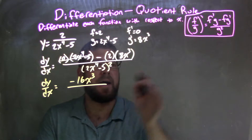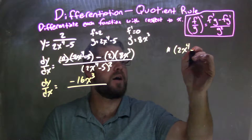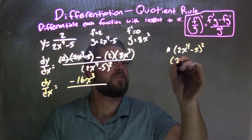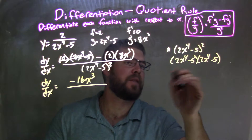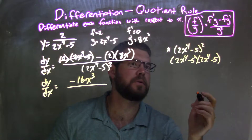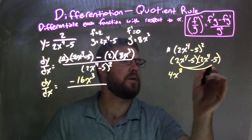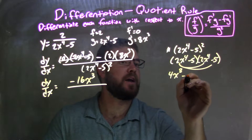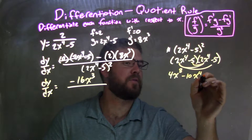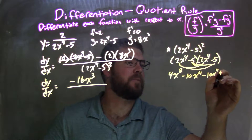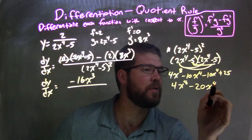For the denominator, we need to multiply that out. If you want, I'll do a little note on the side: 2x to the 4th minus 5, all squared — we can write it as 2x to the 4th minus 5 times itself and FOIL it out. 2x to the 4th times 2x to the 4th is 4x to the 8th. 2 times negative 5 gives negative 10x to the 4th, and negative 5 times 2x to the 4th gives another negative 10x to the 4th. Then negative 5 times negative 5 is positive 25. Adding them together, we have 4x to the 8th minus 20x to the 4th plus 25.